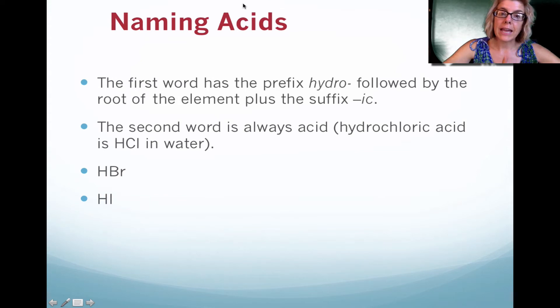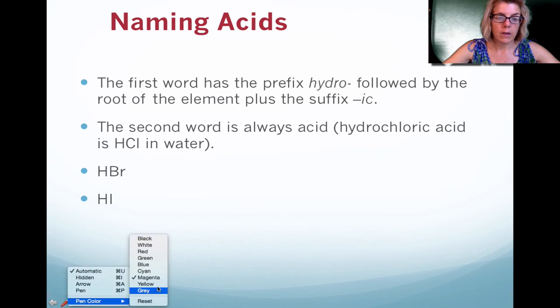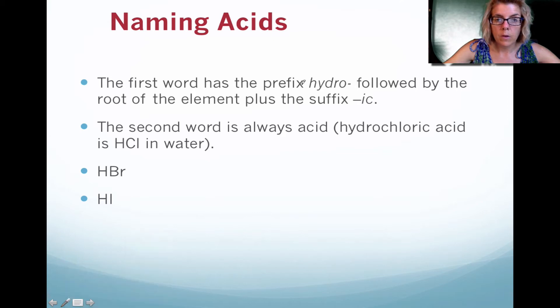Okay, so naming acids. It's a little bit different than just binary compounds. Typically, you have hydrogen that is part of that acid. So because you have hydrogen, you want to use the term hydro or the prefix hydro. So all the acids are going to begin with the word or the prefix hydro. And then notice at the end, the element that is after hydrogen, we call the element name minus the ending, which would be IC.